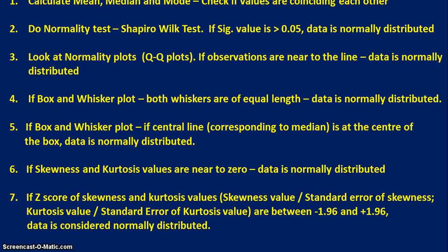Another method is to use the Z-score of skewness and kurtosis. You take the skewness value divided by the standard error of skewness to get the Z-score of skewness. If those Z-scores are between minus 1.96 and plus 1.96, the data is considered to be normally distributed.